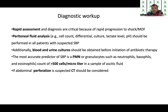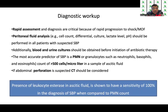Additionally, blood and urine cultures should be obtained before initiation of antibiotic therapy. The most accurate predictor of SBP is a polymorphonuclear count — granulocytes such as neutrophils — of more than 250 per microliter in a sample of ascitic fluid. In case perforation is suspected, a contrast-enhanced CT should be considered. The presence of leukocyte esterase in ascitic fluid has been shown to have a sensitivity of 100% in the diagnosis of SBP when compared with the PMN count, so this should be checked if the facility is available.